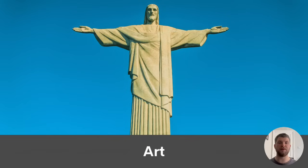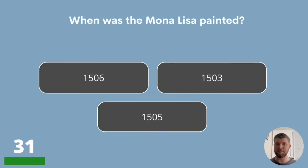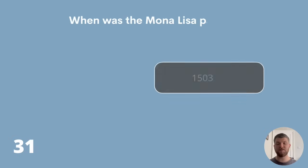Question 31 — our first question in the art category. When was the Mona Lisa painted? Was it painted in 1506, 1503 or 1505? Very close dates — a very tough question. The correct answer is 1503. Well done if you got that one right.